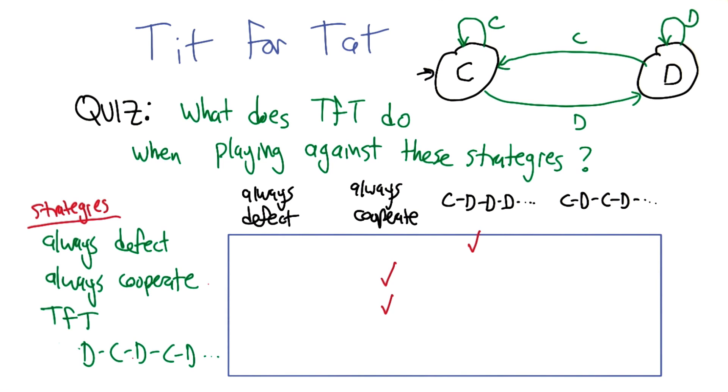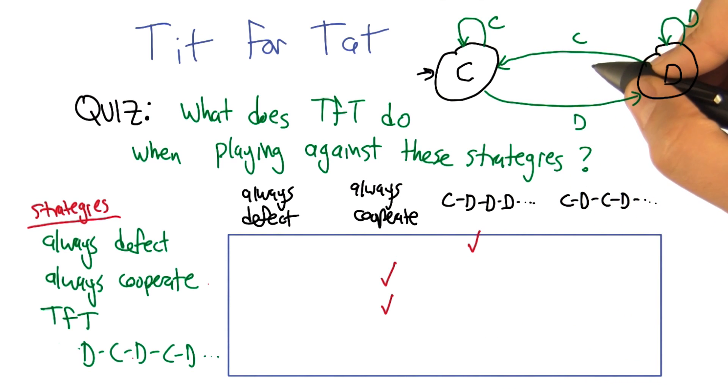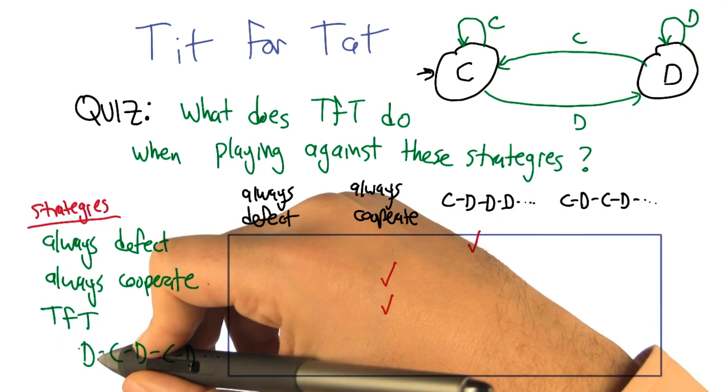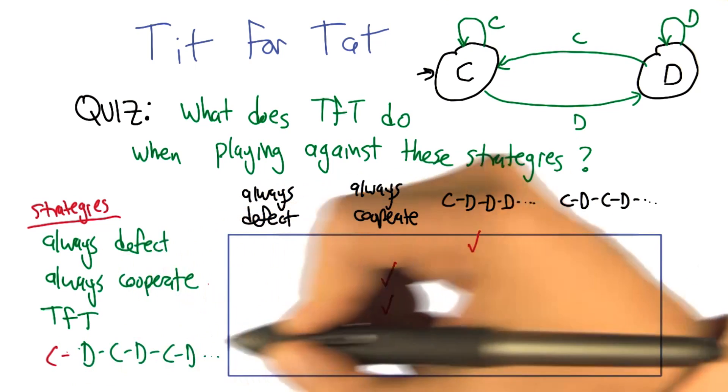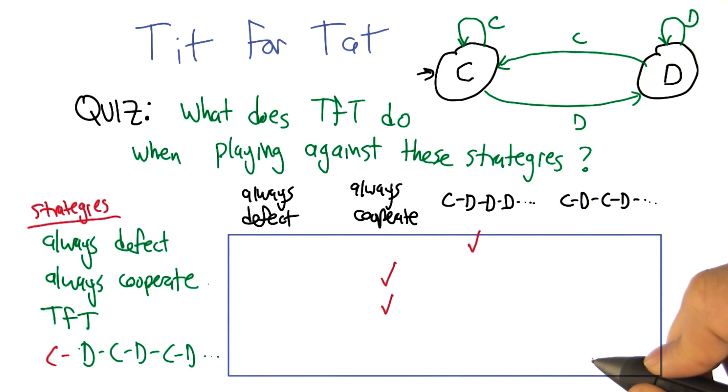So I basically take what you—I'm pointing to the screen, you can't see me—I take the DC, DCD, and I just put a C in front of it, because that's what I'm going to do. So I will do CD, CD, CD, CD, CD ellipsis. So that's your last choice.